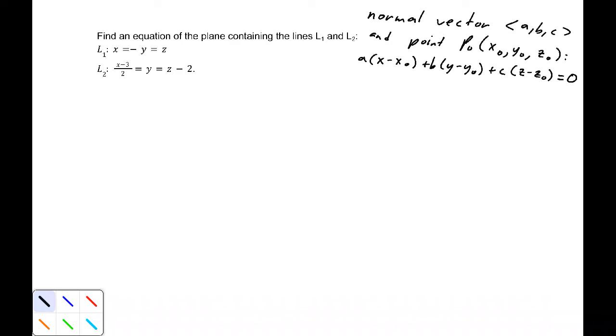We know that the equation of a plane is given by a(x - x₀) + b(y - y₀) + c(z - z₀) = 0.